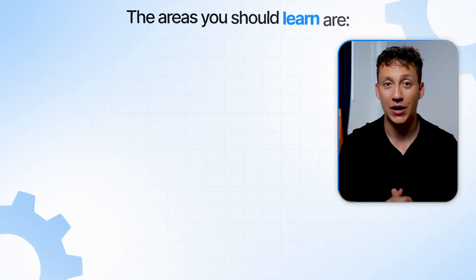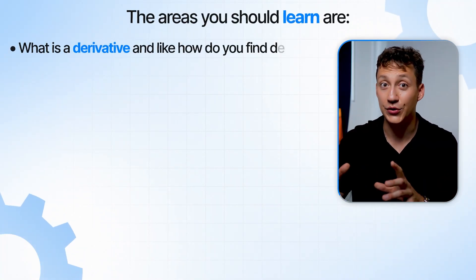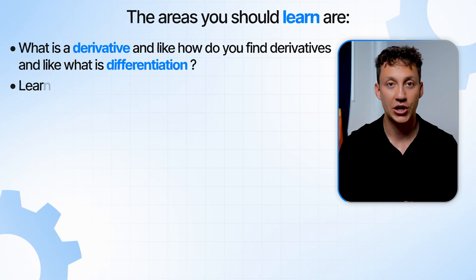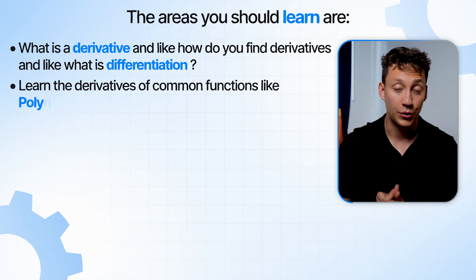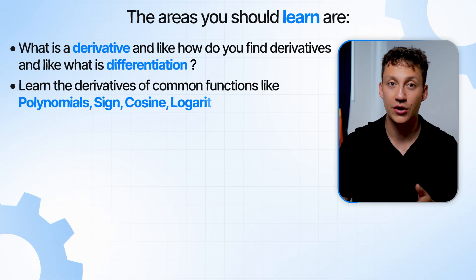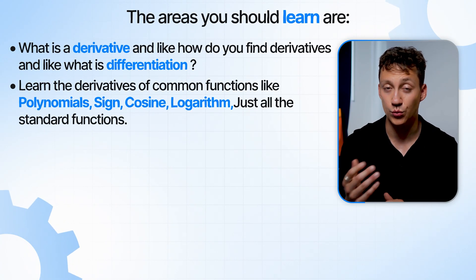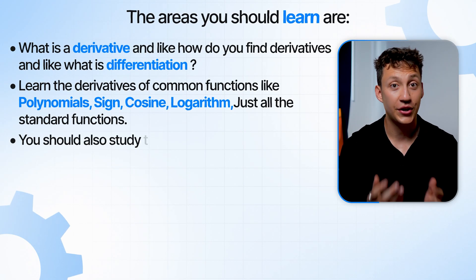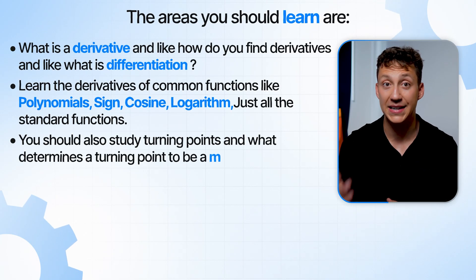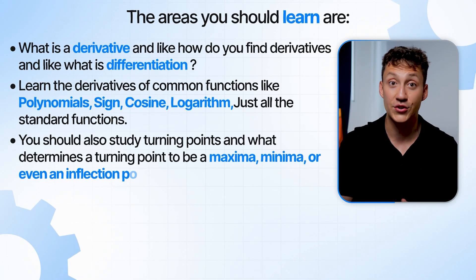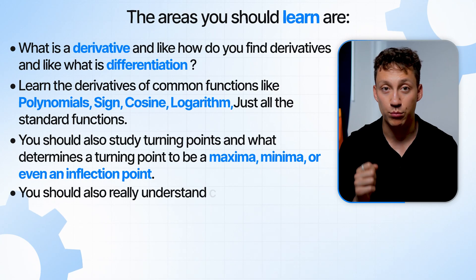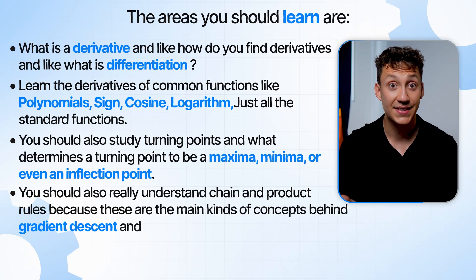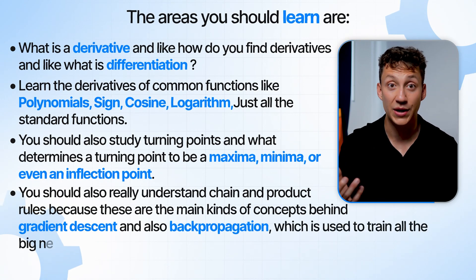In calculus, you should learn what a derivative is and how to find derivatives — the whole understanding of differentiation. You should also learn the derivatives of common functions like polynomials, sine, cosine, and logarithm. You should study turning points and what determines them to be a maxima, minima, or inflection point. You should also really understand chain and product rules because these are the main concepts behind gradient descent and back propagation, which is used to train all large neural networks, including LLMs like ChatGPT and Claude.